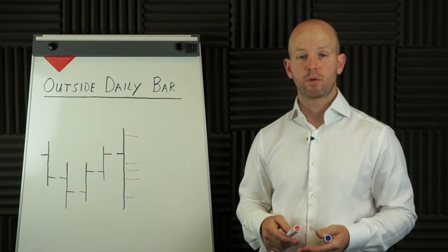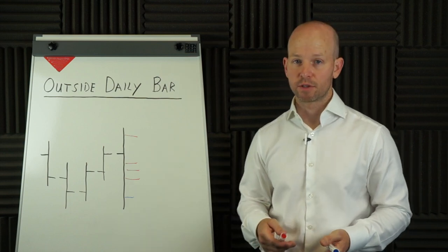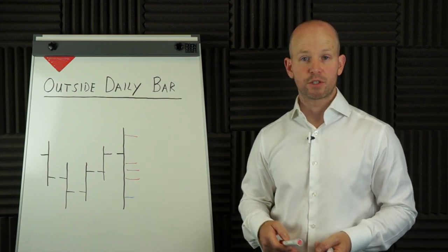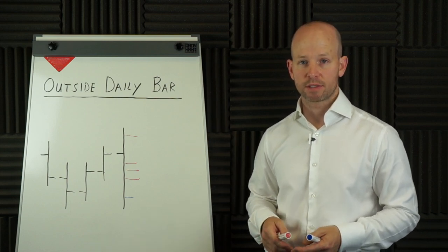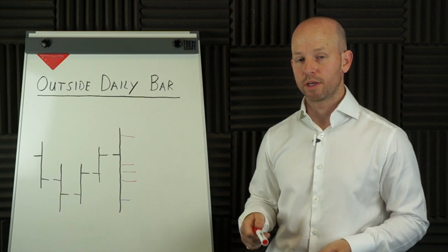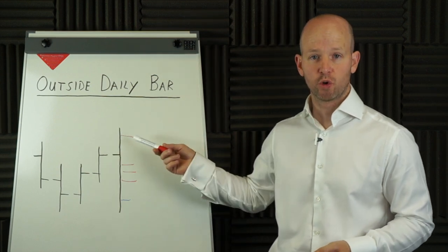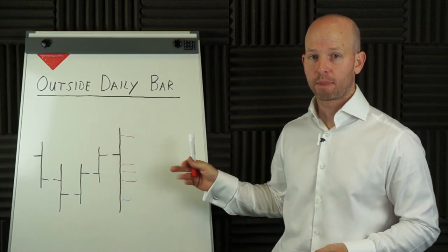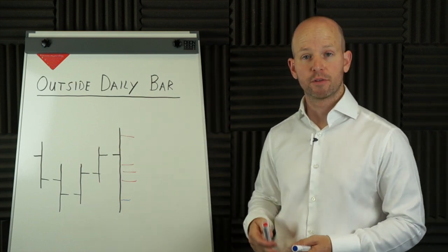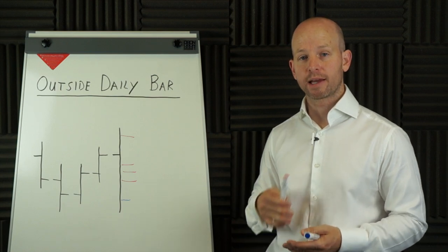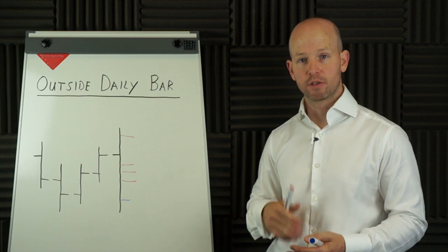The exits are pretty simple. We're going to use a fixed pip stop loss — maybe 200 pips, maybe 250 pips — we'll test that and find out which works best. Another exit is a stop and reverse type: if we're short and then get a signal to go long, we exit the short trade and enter long, swapping and reversing the direction of the trade.